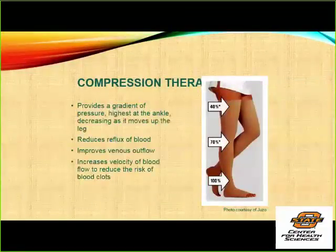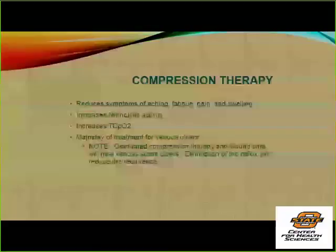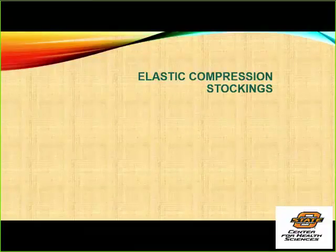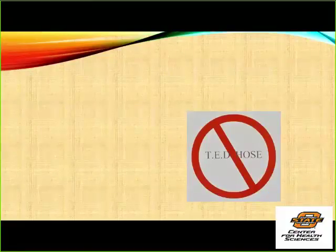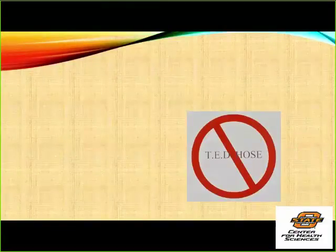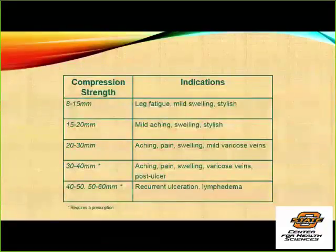Compression therapy: a 20 mmHg stocking means 20 mmHg compression at the ankle, graduating upward. Compression reduces symptoms of aching and fatigue, and reduces edema — you can't get oxygen through fluid unless you're in hyperbarics, so edema in the skin is hypoxic. Reducing edema improves skin oxygenation. TED hose provide only about 8 to 10 mmHg of compression — when a patient stands up, TED hose are not strong enough to support their ambulatory venous hypertension. For patients with true venous hypertension, TED hose are not the treatment of choice. Gradient compression hose are appropriate especially with an ulcer.